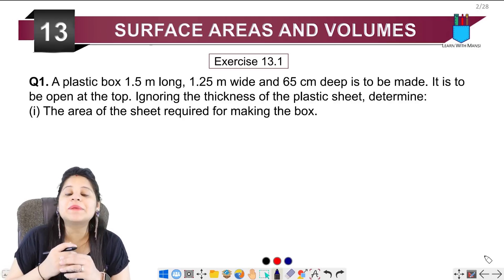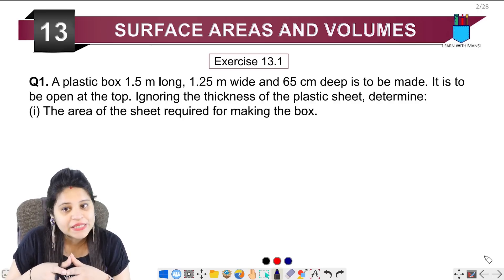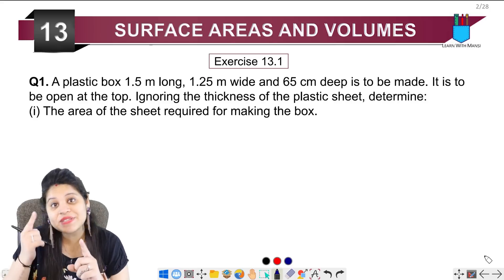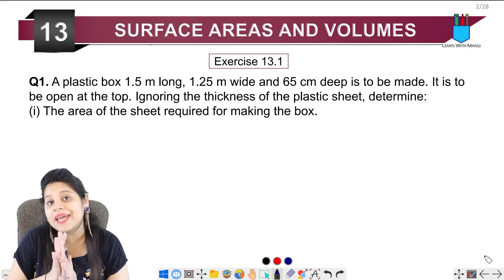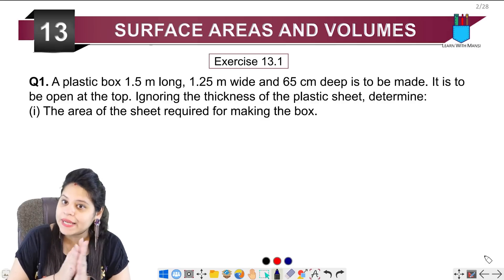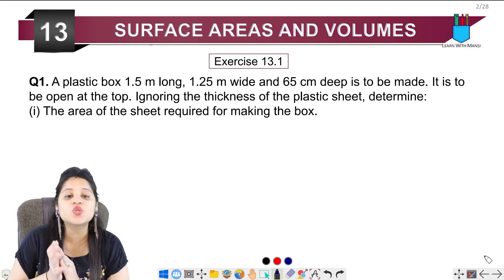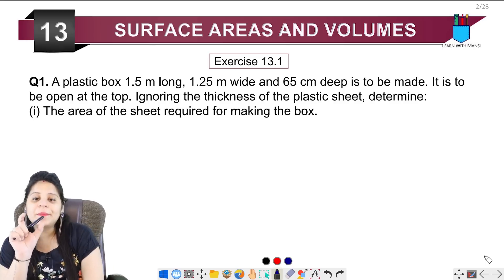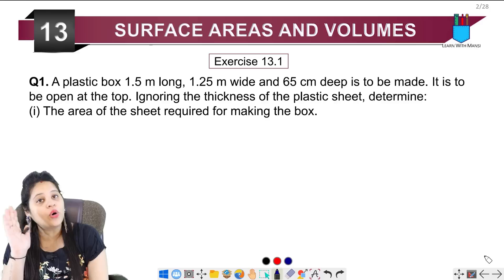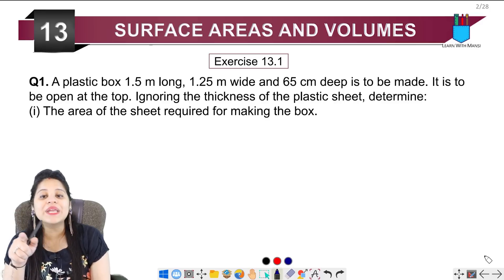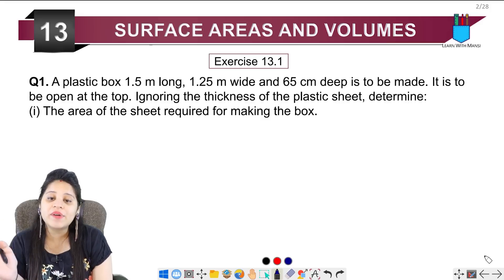Question number 1 says a plastic box 1.5 meter long, 1.25 meter wide and 65 centimeter deep is to be made. First thing here is that there are two things in meter and in centimeter. So we have to convert it to centimeter. Now we have to make a box which will be open at the top. Ignoring the thickness of the plastic sheet, determine the area of the sheet required for making the box.